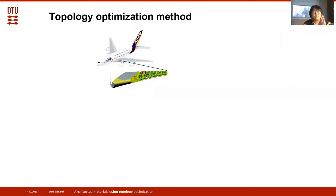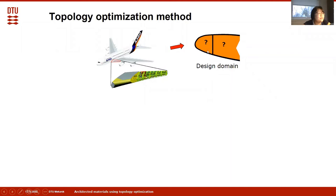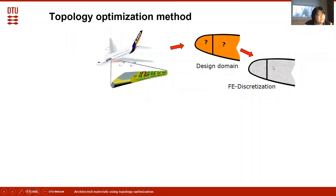I would like to introduce topology optimization using the well-known application of designing frame grips in airplane wings. For a design problem, we first decide where we would like to design our structures. After that, we use numerical approaches to discretize the design domain. Based on this discretization, we introduce design variables for each location to represent the material occupation at that location.